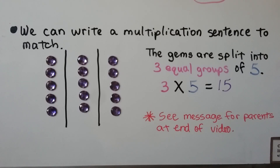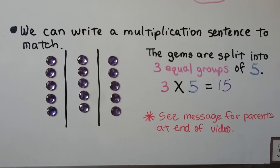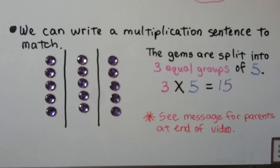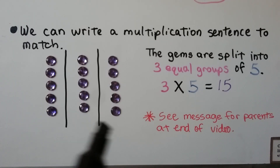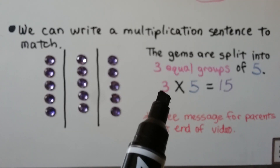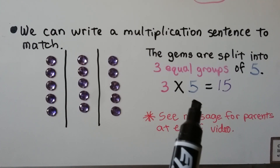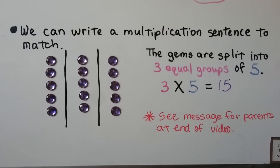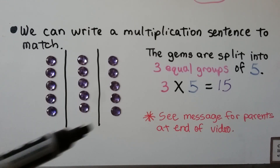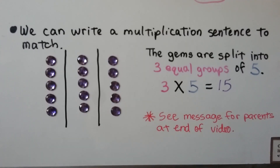We can write a multiplication sentence to match what is shown. These gems are split into three equal groups by these black bars. We have three equal groups, so that's a three. And there's five in each group, so it's three times five — it's equal to fifteen.